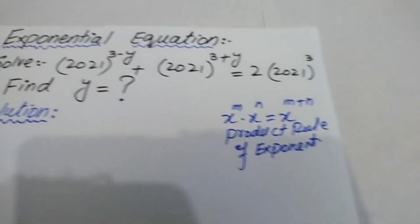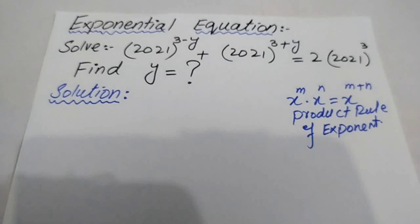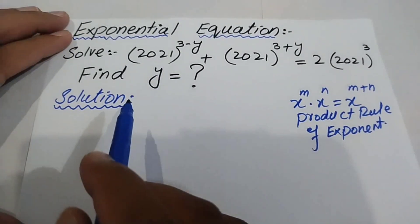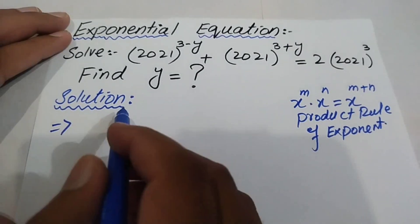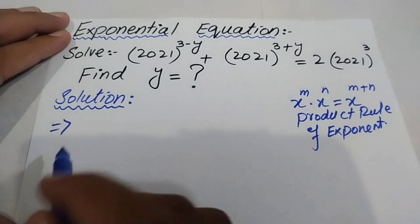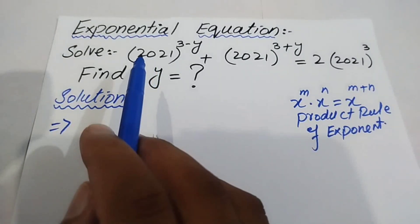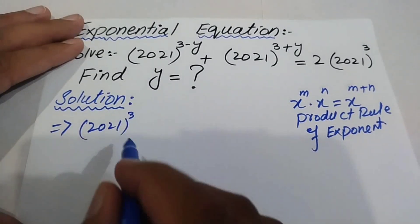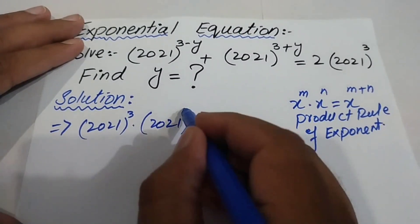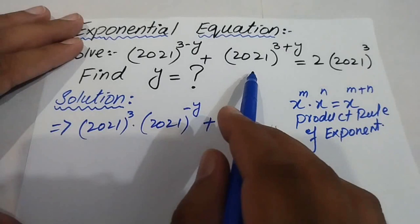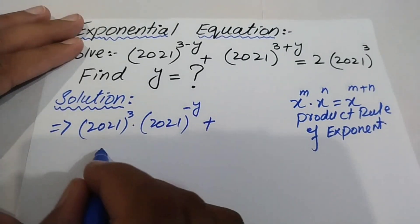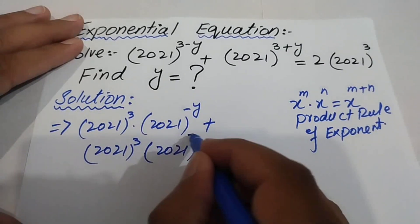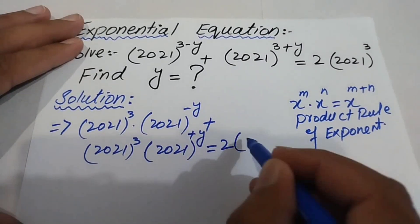Let's start by simplifying the left-hand side. We break the power of 2021 on each term. So we get 2021^3 × 2021^(-y) + 2021^3 × 2021^(+y), which equals 2 × 2021^3.